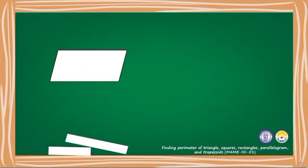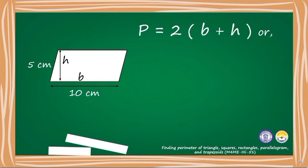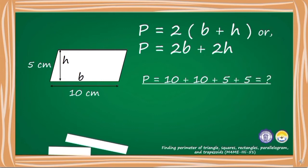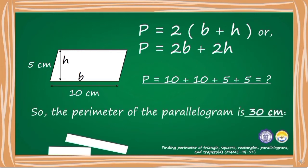This is a parallelogram whose height measures 5 centimeters and the base measures 10 centimeters. The formula in finding the perimeter of a parallelogram is P equals 2 times B plus H or P equals 2B plus 2H. P equals 10 plus 10 plus 5 plus 5. So the perimeter of the parallelogram is 30 centimeters.